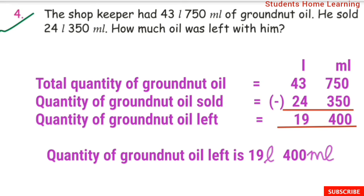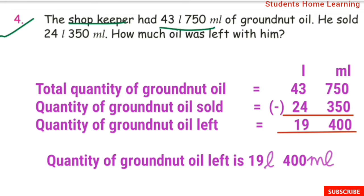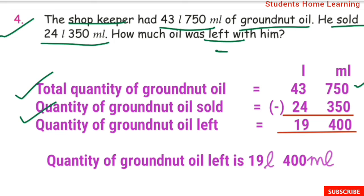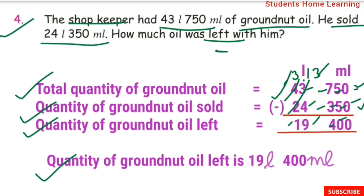Word problem 4: The shopkeeper had 43L 750ml of groundnut oil. He sold 24L 350ml. How much oil was left? Subtraction: 0 minus 0 is 0, 5 minus 5 is 0, 7 minus 3 is 4, 3 minus 4 requires borrowing; total quantity of groundnut oil left is 19L 400ml.